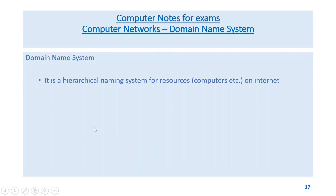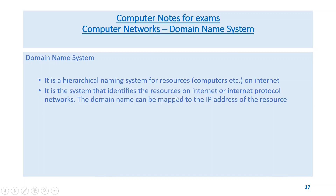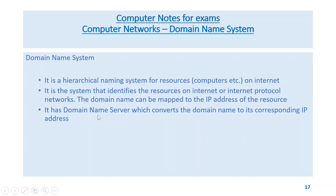DNS — domain name system — is a hierarchical naming system for resources and computers on the internet. It is the system that identifies resources on internet protocol networks. The domain name can be mapped to the IP address of the resource. It has a domain name server which converts the domain name to its corresponding IP address.